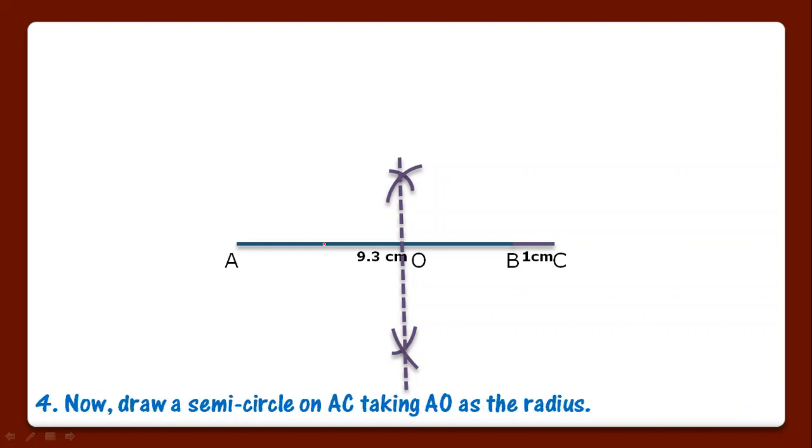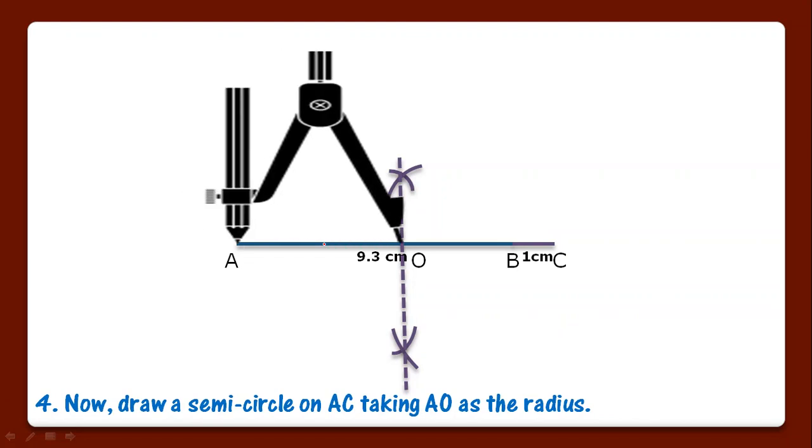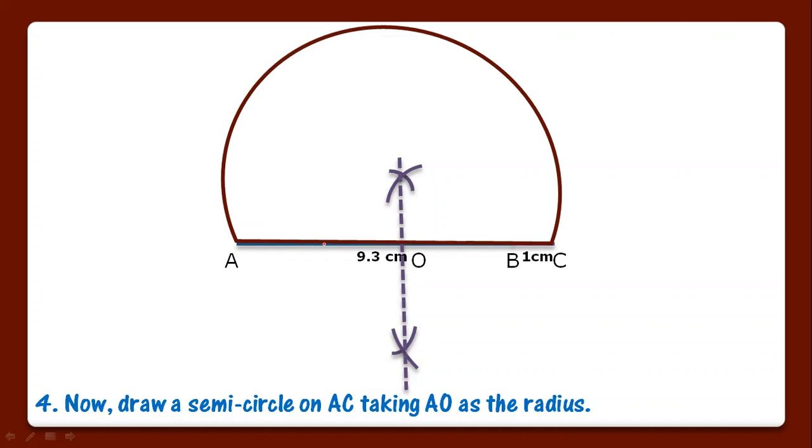Fourth step: draw a semicircle on AC, taking AO as radius. You have to open your compass taking AO as radius and draw a semicircle like this.